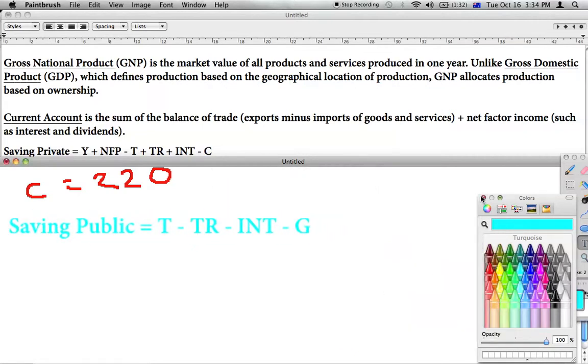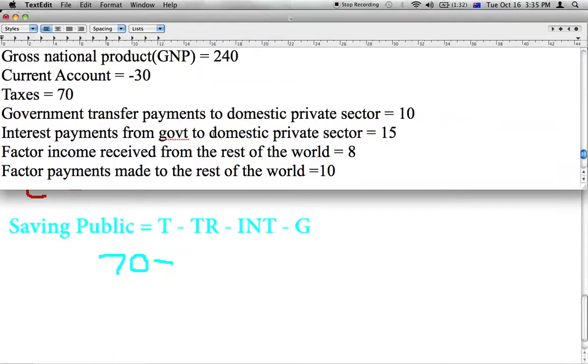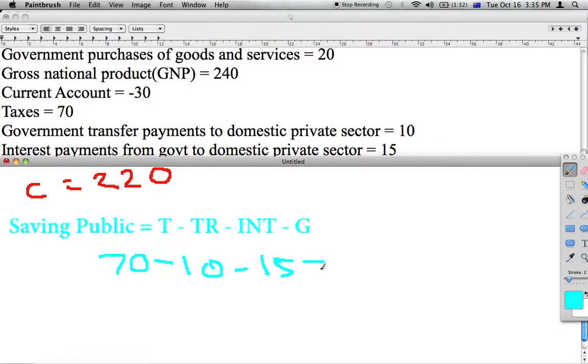And we can just fill in the gaps once again. So T, tax being 70, minus our transfer payments, which looking at the data was 10, minus 15 for interest, and minus how much the government's spending on goods and services, it was 20. Which equals 70 minus 10 minus 15 minus 20 equals 25.